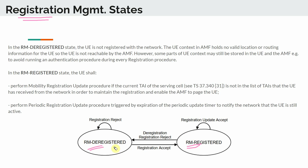If you are in a deregistered state and you perform a registration message and you get a registration accept, that means the network has given you permission to access the network, and you will enter what is called the RM-Registered state. If you are in a registered state and you get a reject message from the network, you will transition back to the deregistered state. Or if you are in a deregistered state and the network repeatedly keeps rejecting you, you will remain in that state.